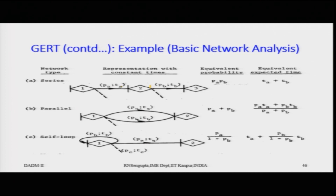For two paths in series from node 1 to 2 and 2 to 3, the equivalent probability is the product of individual probabilities. The equivalent expected time is their sum. For a parallel circuit — two paths from node 1 to 2, one with PA and TA, another with PB and TB — the equivalent probability is PA + PB (their sum, which must be ≤ 1). The equivalent expected time is (PA·TA + PB·TB) / (PA + PB), and for three paths it extends to (PA·TA + PB·TB + PC·TC) / (PA + PB + PC).